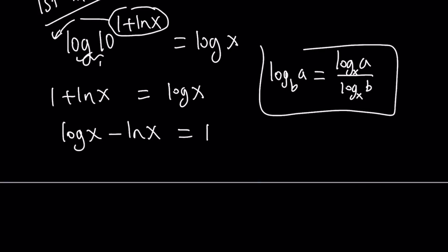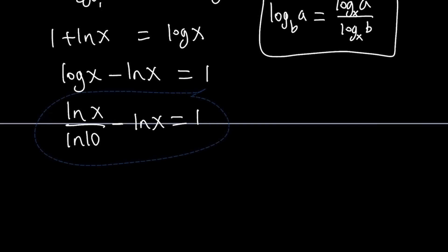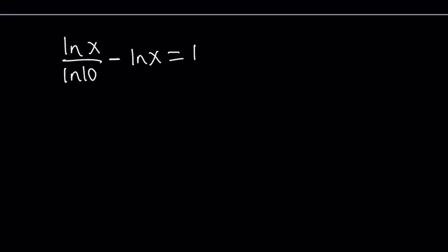I'm going to use the change of base formula with natural log as the base, which is base e. So log x can be written as ln x over ln 10, giving us ln x over ln 10 minus ln x equals 1. Now we're going to take out an ln x since we can factor this.